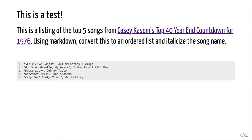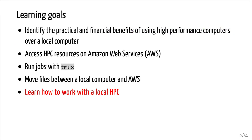This will be a very useful tool in the coming tutorials where we talk about documentation. The learning goals for today's tutorial are to identify the practical and financial benefits of using high-performance computers, or HPCs, over a local computer. We'll access HPC resources on Amazon Web Services, see how you can run jobs using a program called TMux, and then see how we can move files between a local computer and AWS.